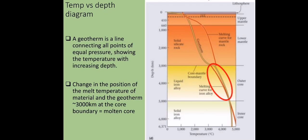The temperature versus depth diagram we have the geotherm, which is a line that shows the temperature and pressure at increasing depth. At about 3000 kilometers, there is a change in the trend of the lines whereby the melting temperature of the material is lower than the geotherm. In other words, the recorded temperature is higher than the melting temperature of the material, further proving that we have a molten outer core.